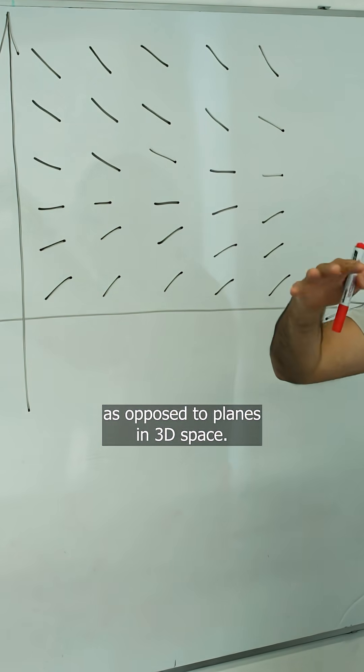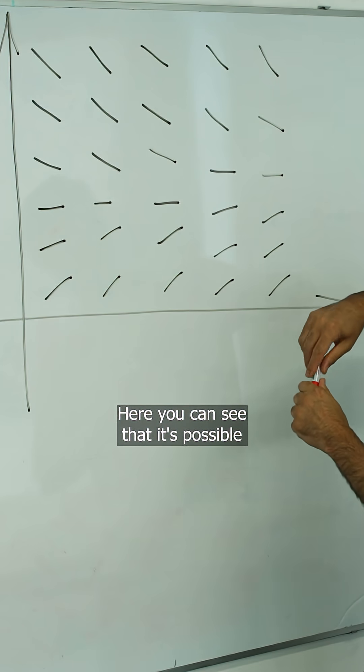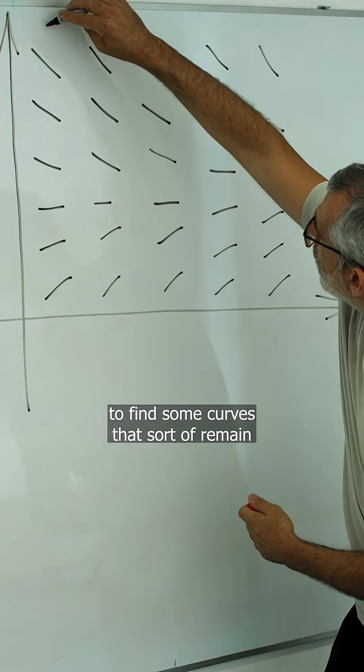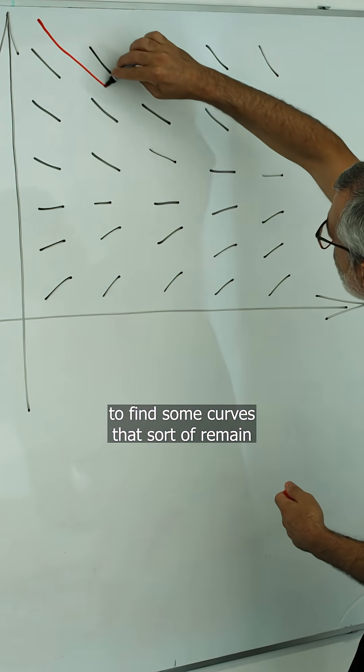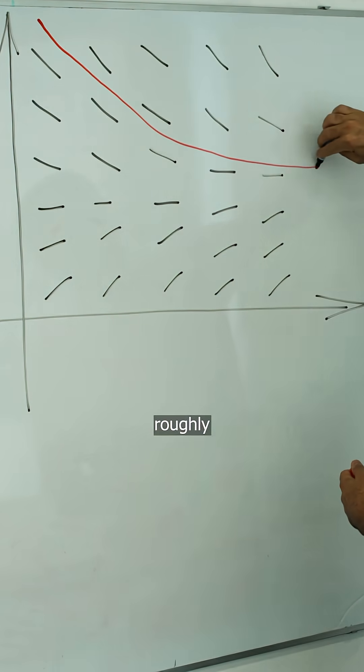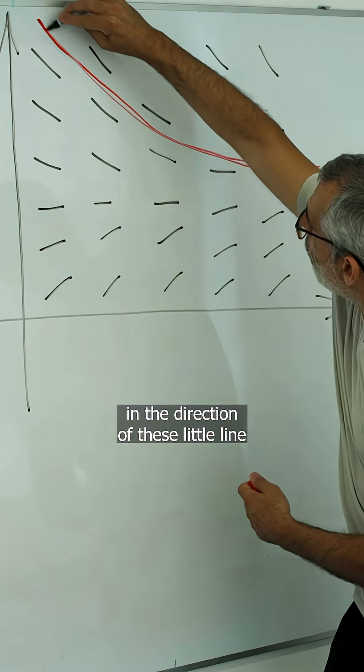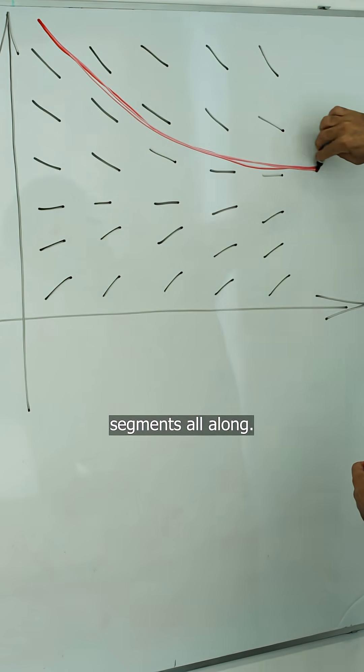Here you can see that it's possible to find curves that remain roughly in the direction of these little line segments all along.